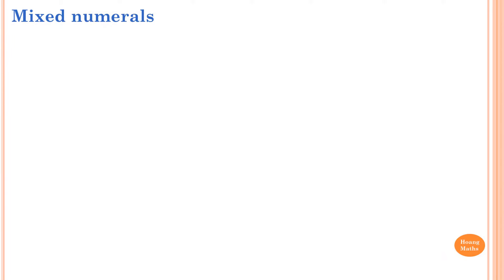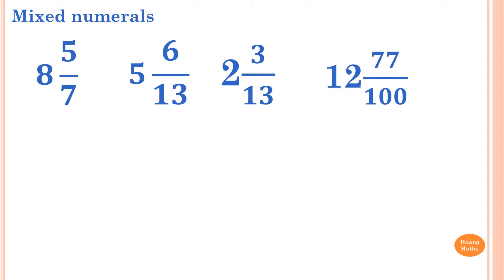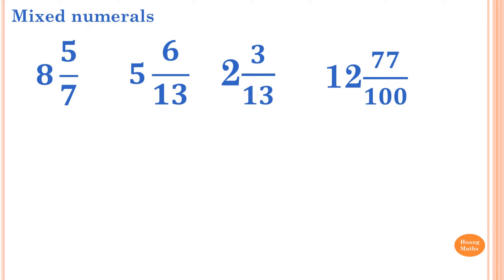A mixed numeral is a number that involves a whole number and a proper fraction. For example, 8 and 5/7, 5 and 6 over 13, 2 and 3 over 13, 12 and 77 over 100, and so on. These are mixed numerals because they have a whole number and a proper fraction. Please remember that.